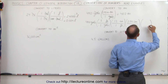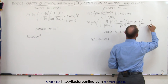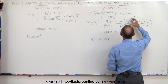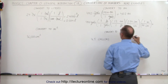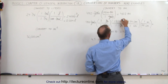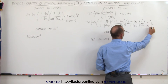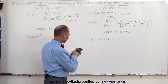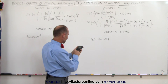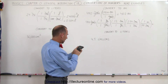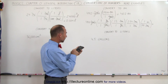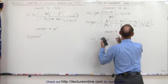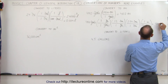Finally, convert from centimeters to meters: centimeters goes at the bottom, meters at the top — one meter is 100 centimeters. Notice the yards cancel out, feet cancel out, inches cancel out, centimeters cancel out, and you're left with meters. Calculating: 440 times 3 times 12 times 2.54 divided by 100 gives 402.3 meters. Since we started with three significant figures, we write 402 meters — the exact same result as before.